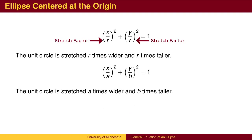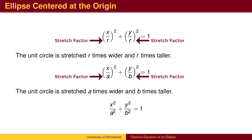An ellipse is a circle that has been stretched unequally. We can stretch by a factor of a in the x-direction and a factor of b in the y-direction. We can also write the equation of an ellipse without the parentheses. The last equation is the standard form of an ellipse centered at the origin.